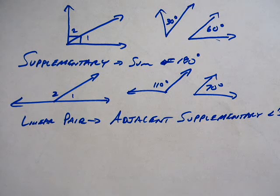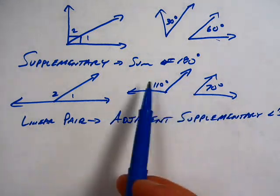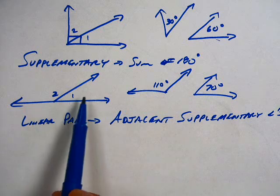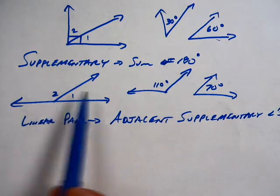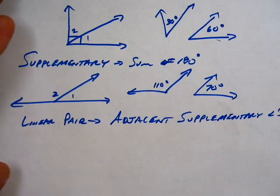So, linear pair. Together, you smoosh them together. Well, they're already together, and they're forming a line. Are these two a linear pair? No. Are these two a linear pair? Yes, they're next to each other, and they form a line. Linear pair is a big deal. Linear pair is a really big deal.